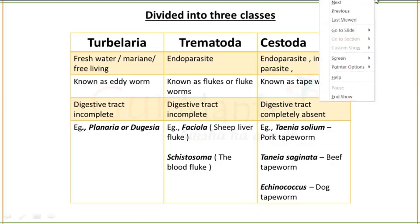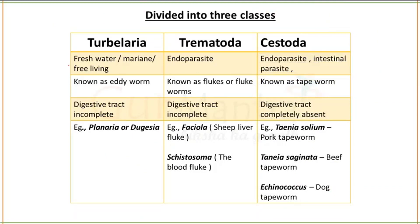Platyhelminthes are divided into three different classes. Class 1 is Turbellaria. Class 2 is Trematoda. Class 3 is Cestoda. Regarding habitat: Turbellaria are freshwater, marine, or free-living. Trematoda are endoparasites, and Cestoda are also endoparasites as well as intestinal parasites.